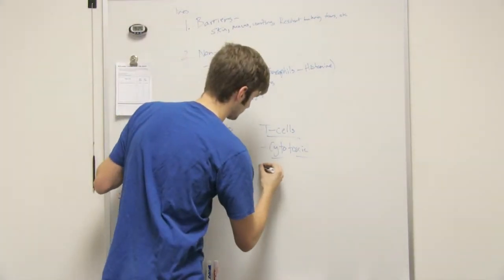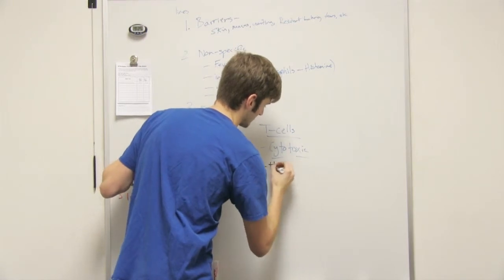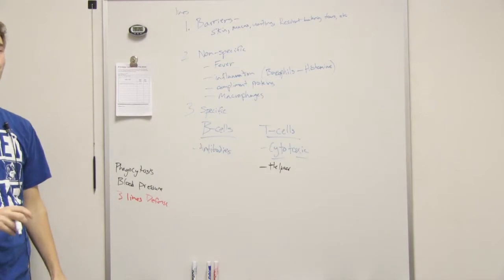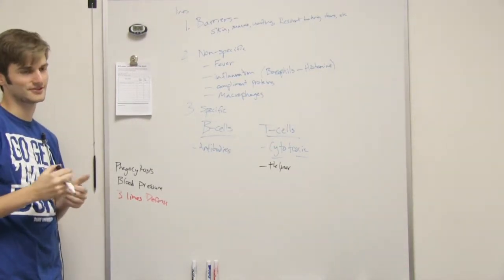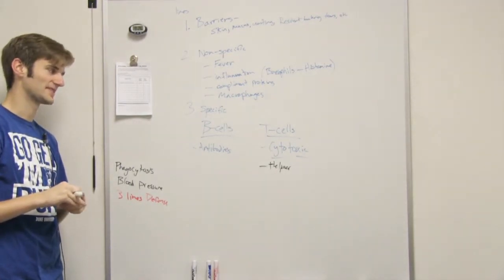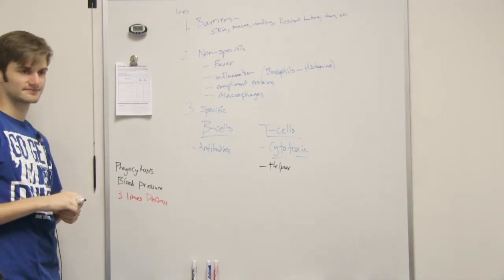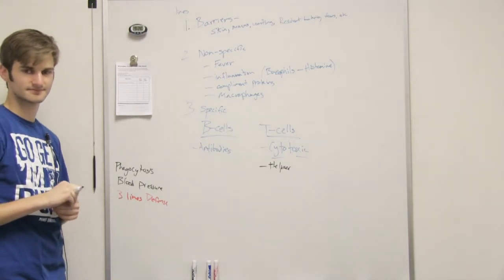The next type, helper T cells. Helper, like the name says, their whole point is to help stimulate or signal B cells to do their job, which is to produce the antibodies. So that's all the helper T cells do. They help signal the B cells.